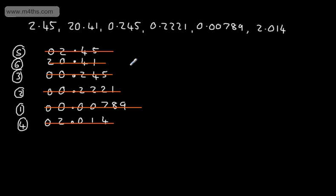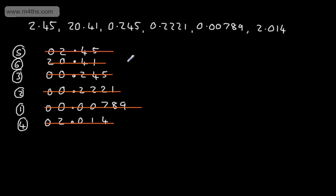Often you'll hear this being called ascending order — ascending means it's getting larger. Descending is the opposite; that means it's getting smaller. So that's ordering decimals.